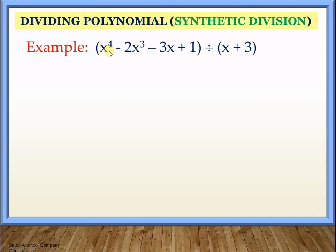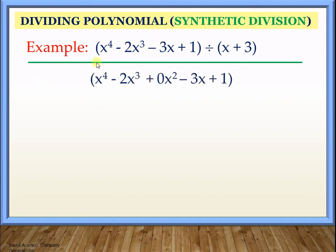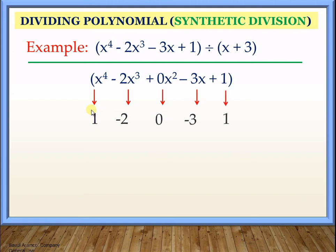Let's have one more. Divide the quantity of x to the 4th minus 2x cubed minus 3x plus 1 by the quantity of x plus 3. Check again — is there any missing variable? Yes. I have x to the 4th, x cubed, but I don't have x squared, and I have x and a constant. So we include x squared using the same process: x to the 4th, x cubed, 0x squared, minus 3x, plus 1. Copy the numerical coefficients: 1, negative 2, 0, minus 3, and 1. The divisor is plus 3, so we place negative 3 here.